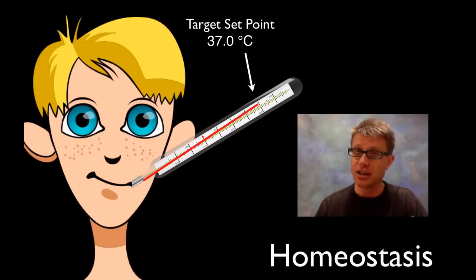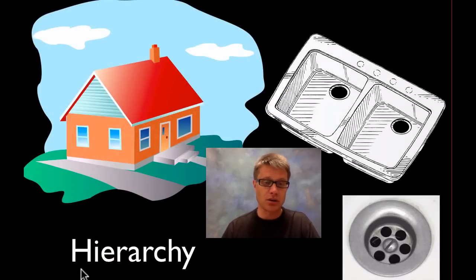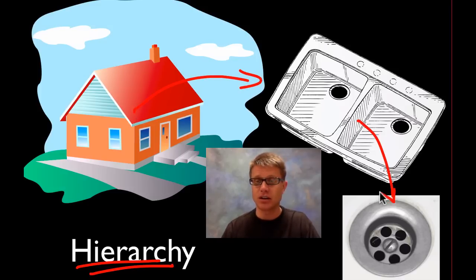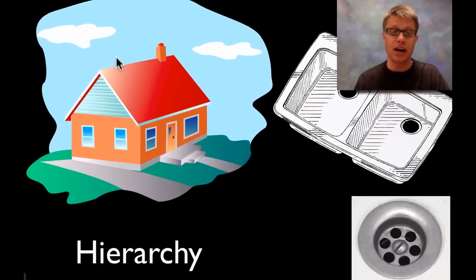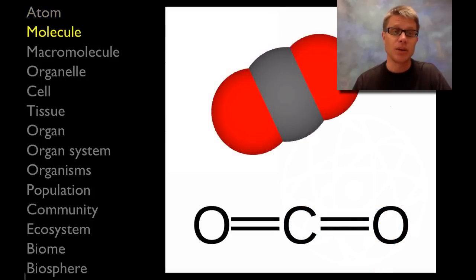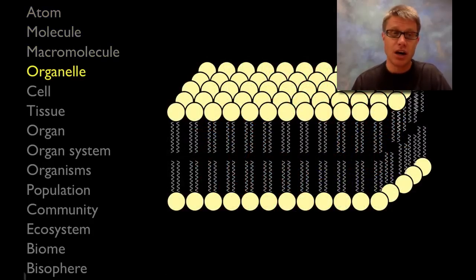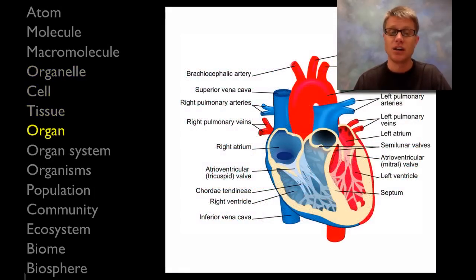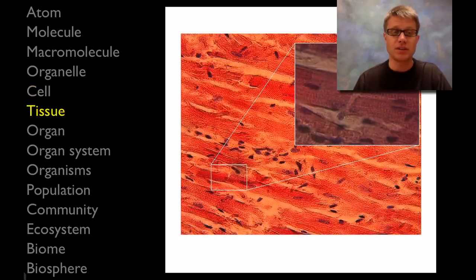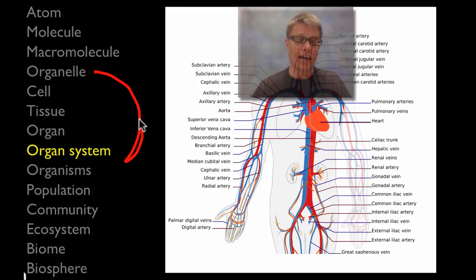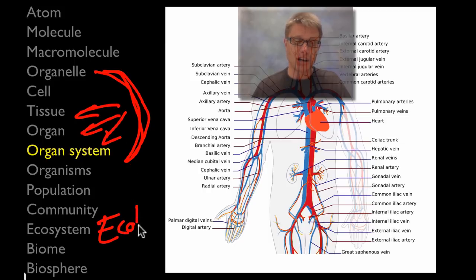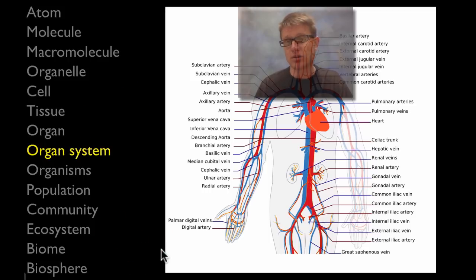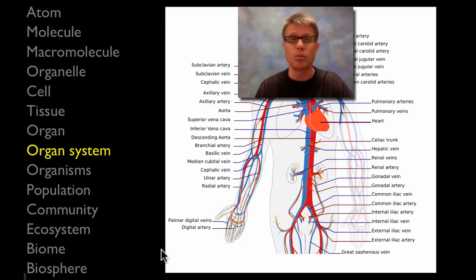In anatomy and physiology we'll learn a number of these different feedback loops. Another important theme is hierarchy — in a house you've got a kitchen, a sink, a drain; parts that make up the whole. Same thing in biology: we start at the level of an atom, which forms molecules, macromolecules, organelles, cells, tissues, organs, and organ systems. Anatomy and physiology really begins at the level of cells, tissues, organs, and organ systems. Each time we move up to a higher level of hierarchy we get emergent properties that start to show up.